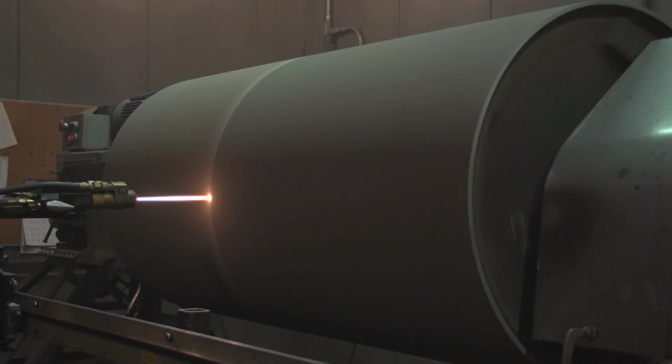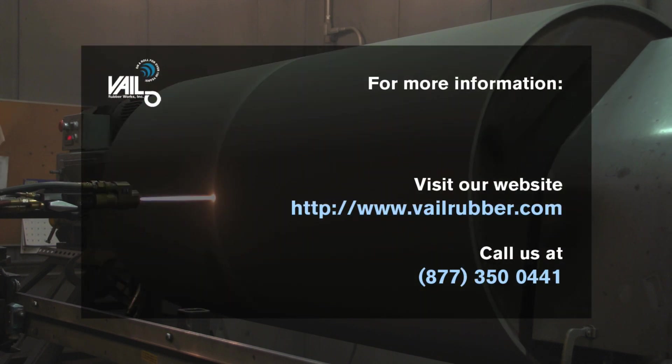To find out how to increase the life of your rolls, log on to www.VailRubber.com or call us at 877-350-0441.